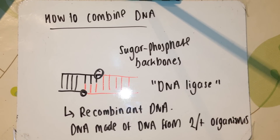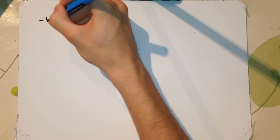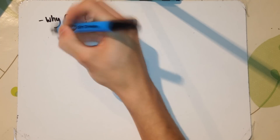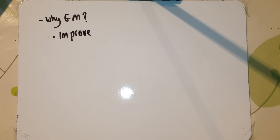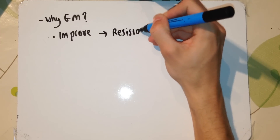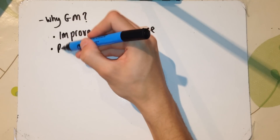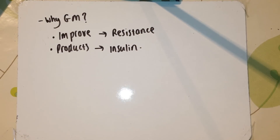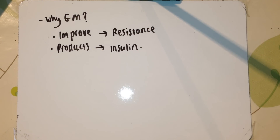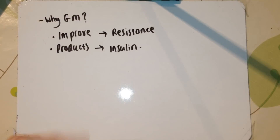Why do we genetically modify organisms? There are two main reasons. The first is improving — for example, farmers may genetically modify crops with a resistance gene, which means they get higher yields, so we don't get fungus eating the crops. The other reason is products. Bacteria can be used to produce products such as insulin for humans.